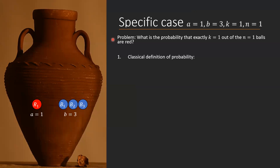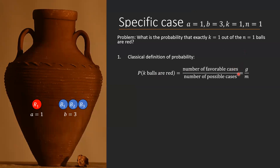We start with the classical definition of probability, which is that the probability of an event happening is the number of favorable cases divided by the number of possible cases. In our case, the event is that k balls are red — k balls out of those we took out are red. A favorable case is one in which the ball was red, and a possible case is anything that can happen when you take out n balls from the urn.